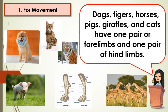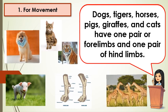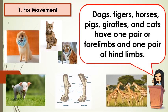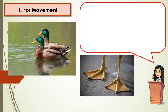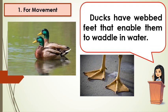Dogs, tigers, horses, pigs, giraffes, and cats have one pair of forelimbs and one pair of hindlimbs. Do you know these animals? These are ducks and they have webbed feet that enable them to waddle into water.